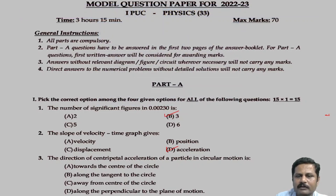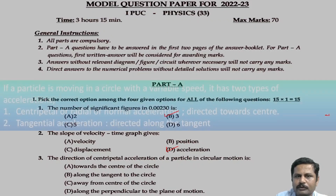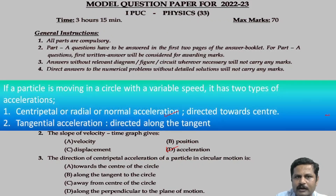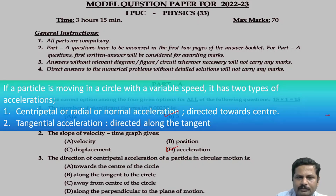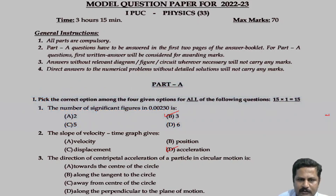Now, the direction of centripetal acceleration of a particle in circular motion. Whenever a body moves in a circular path, it possesses two types of acceleration: centripetal acceleration and tangential acceleration. Centripetal acceleration is always directed towards the center, whereas tangential acceleration is directed along the tangent. So the correct option is that the direction of centripetal acceleration is towards the center of the circle. Option E is the right answer.